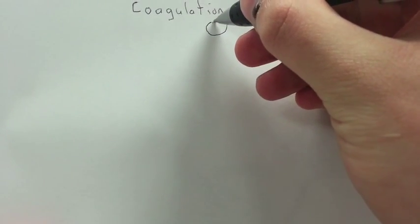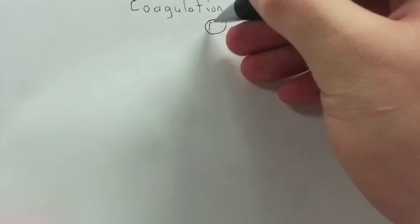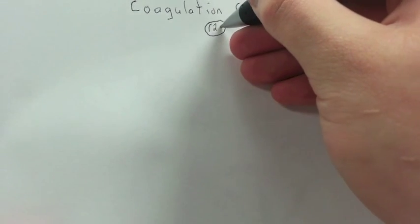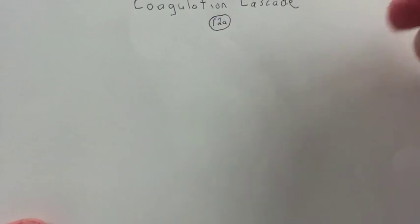So for the overview of the cascade, there's the intrinsic and the extrinsic pathways, and we're going to do the intrinsic first because those are the more complicated ones. It's activated by negatively charged surfaces, which goes from 12 to 12a. I'm going to be leaving out the step from 12 to 12a and just write 12a. And also, these are supposed to be in Roman numerals, but it really doesn't matter.